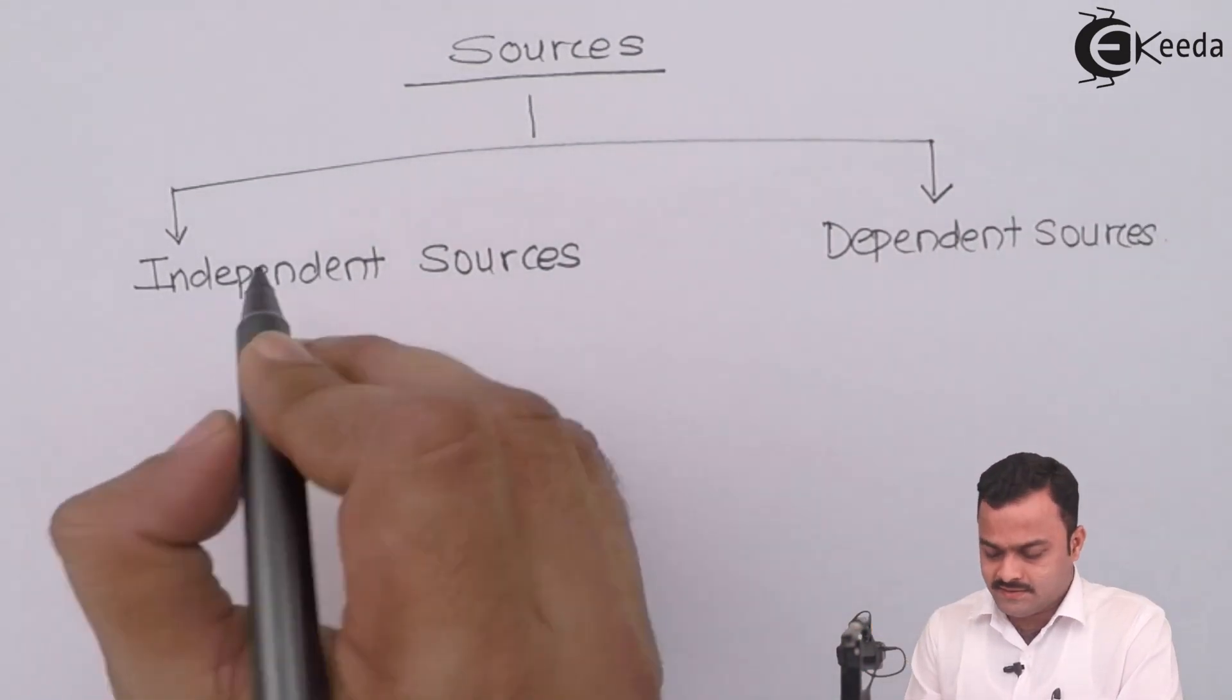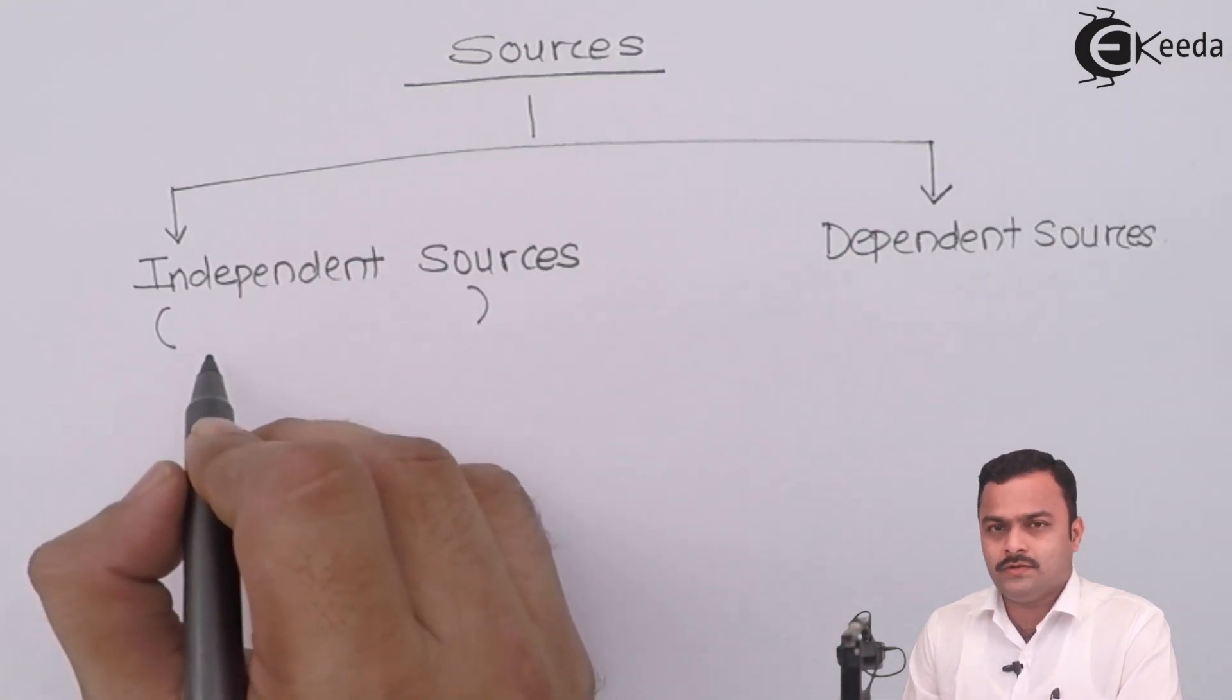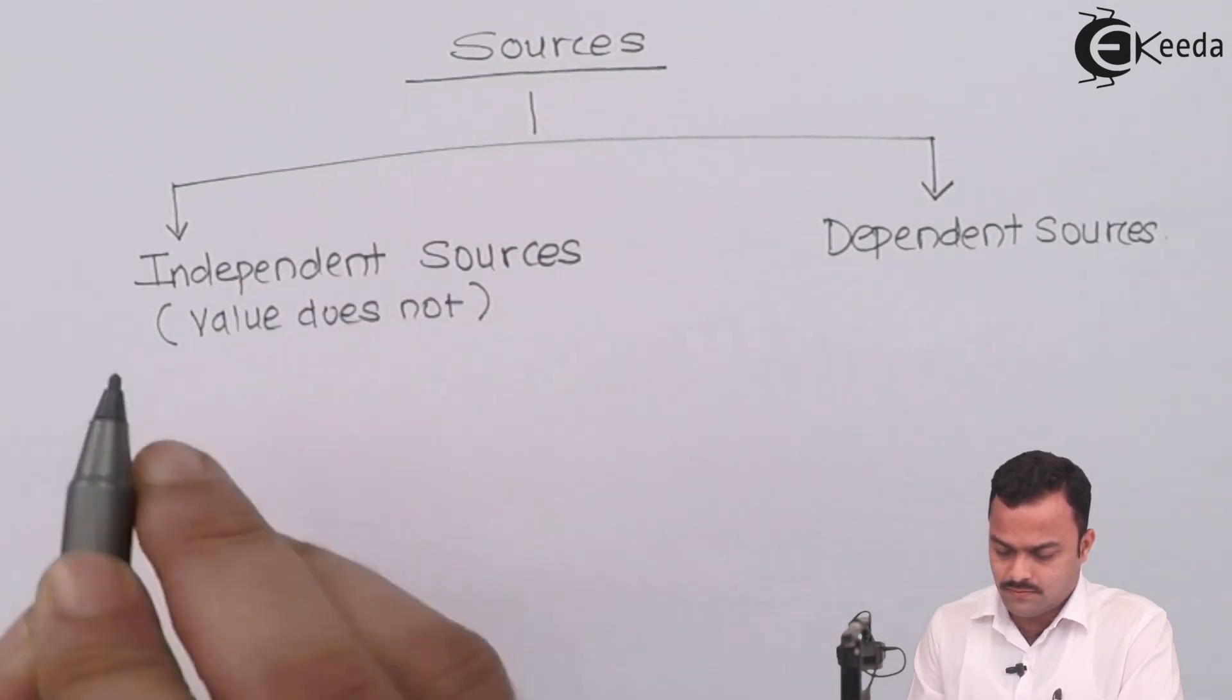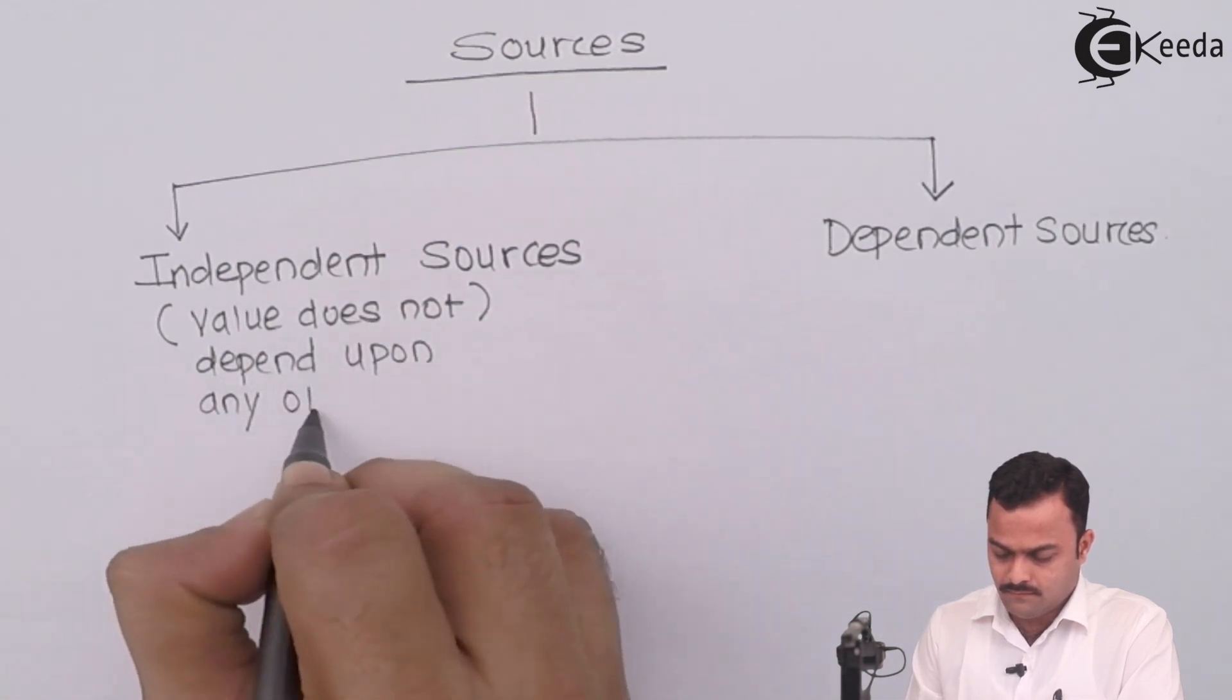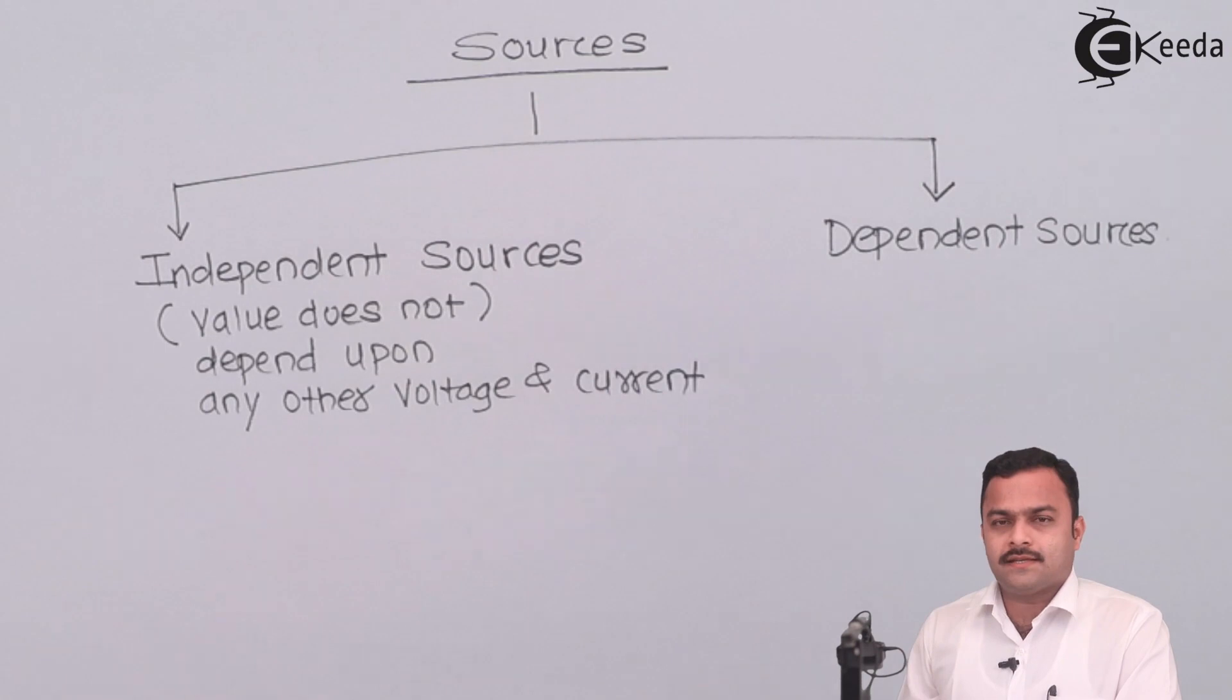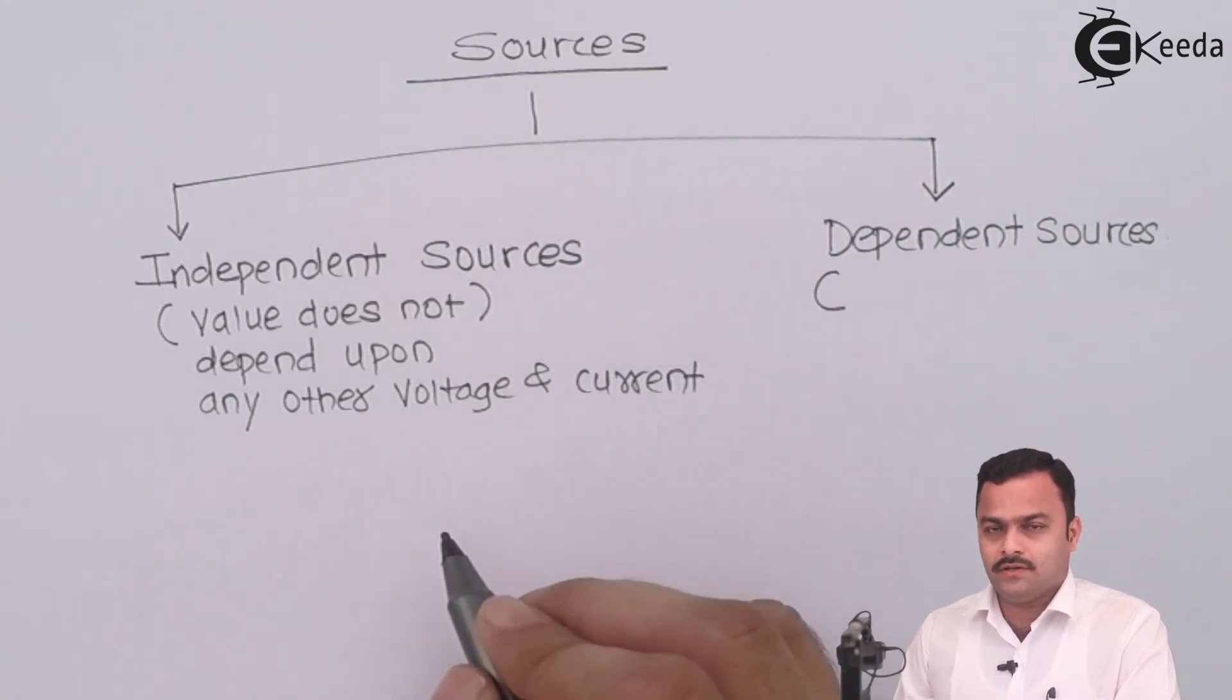As name suggests, independent source is a constant source whose value do not depend upon any other voltage or current. Whereas in dependent sources, the value of the source does depend upon some other voltage or current.